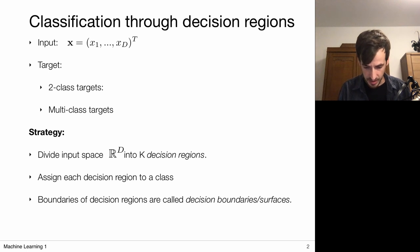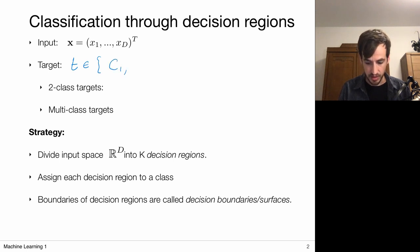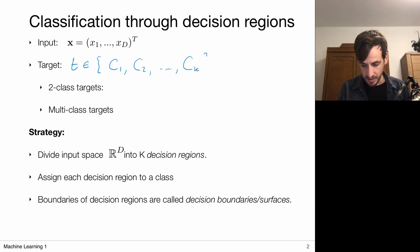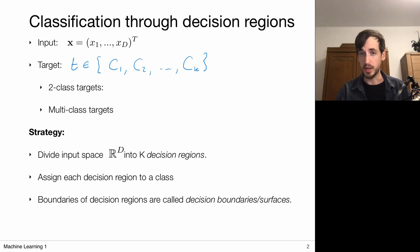We say that our target belongs to one out of, let's say, a k class, denoted as class one, class two, and class k. So my target can only take on one of these options — I have a discrete target.